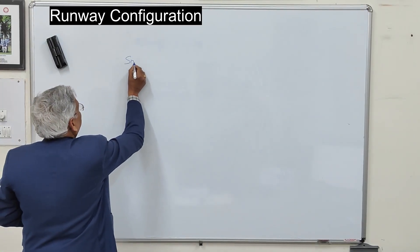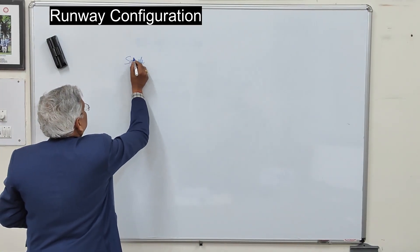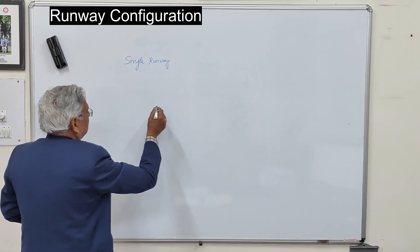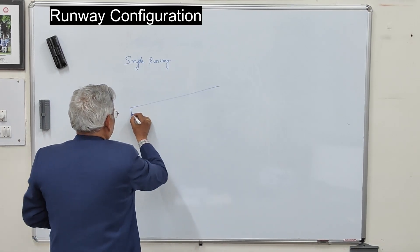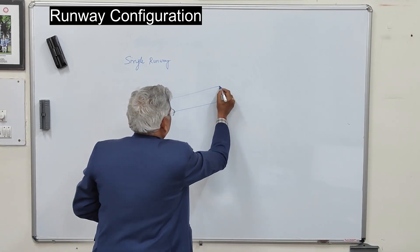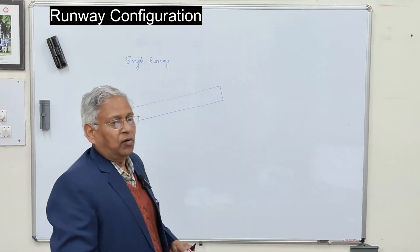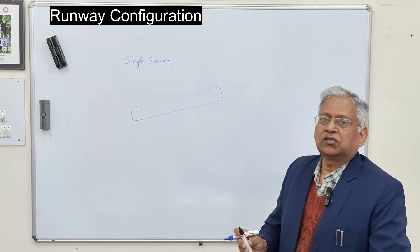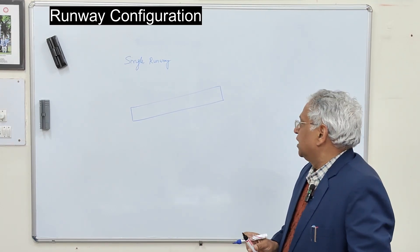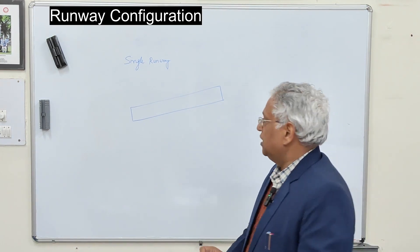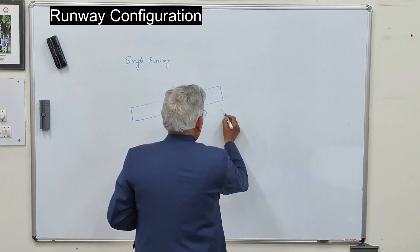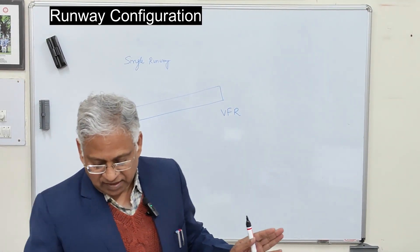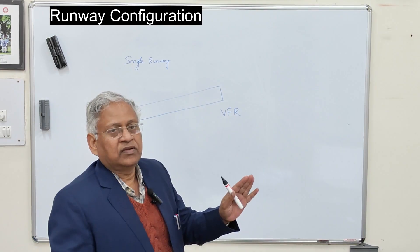The first is single runway, which is the simplest configuration. It is adopted when the wind condition is almost uniform and the runway can be used throughout the year, and air traffic demand is not very high. Under VFR conditions — visual flight rules — these flights are generally outside the air traffic control system.